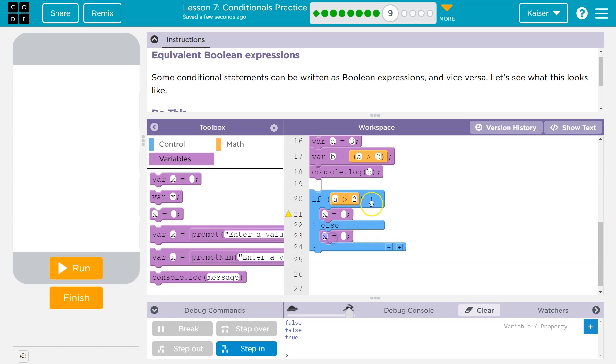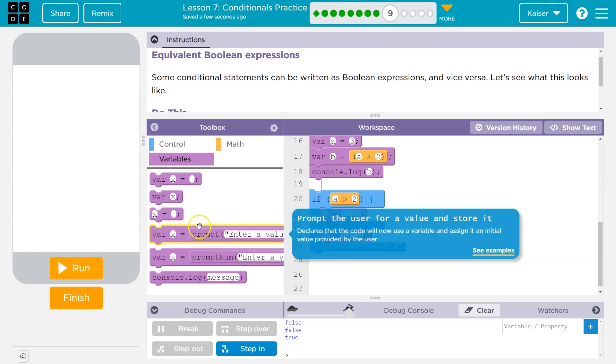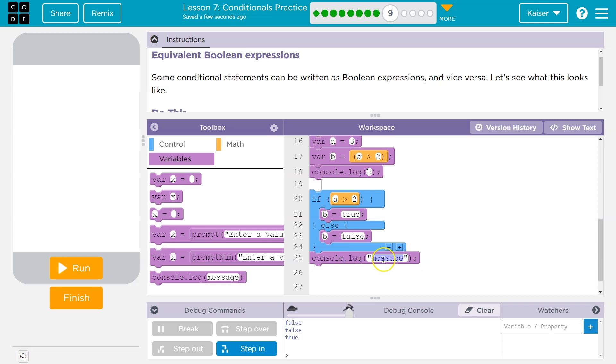And if a is greater than two, we would want b to be true. If a is not greater than two, we want b to be false. And then we need to console log it. I'm going to delete all this stuff. And type b.